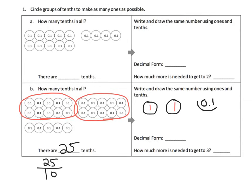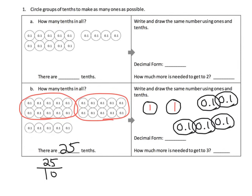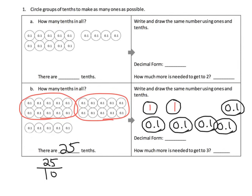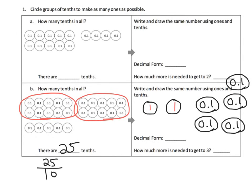After making two wholes from twenty tenths, we have five tenths left over, shown as five 0.1 discs. So the decimal form is 2.5 — two and five tenths. Then we ask: how much more is needed to get to the next whole number, which is 3? Since we've gone five out of ten tenths, we need five tenths more.